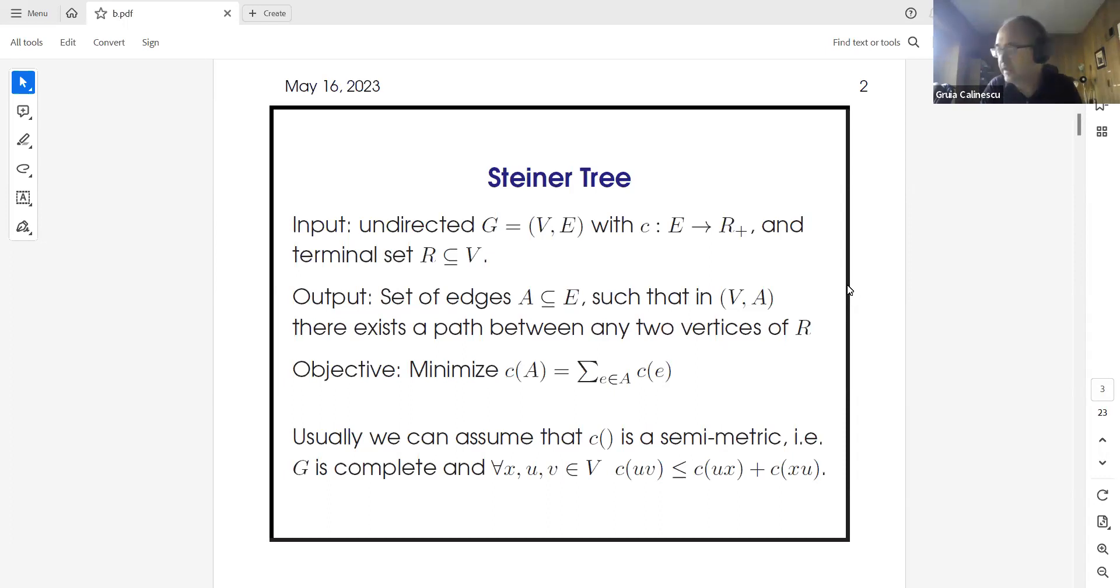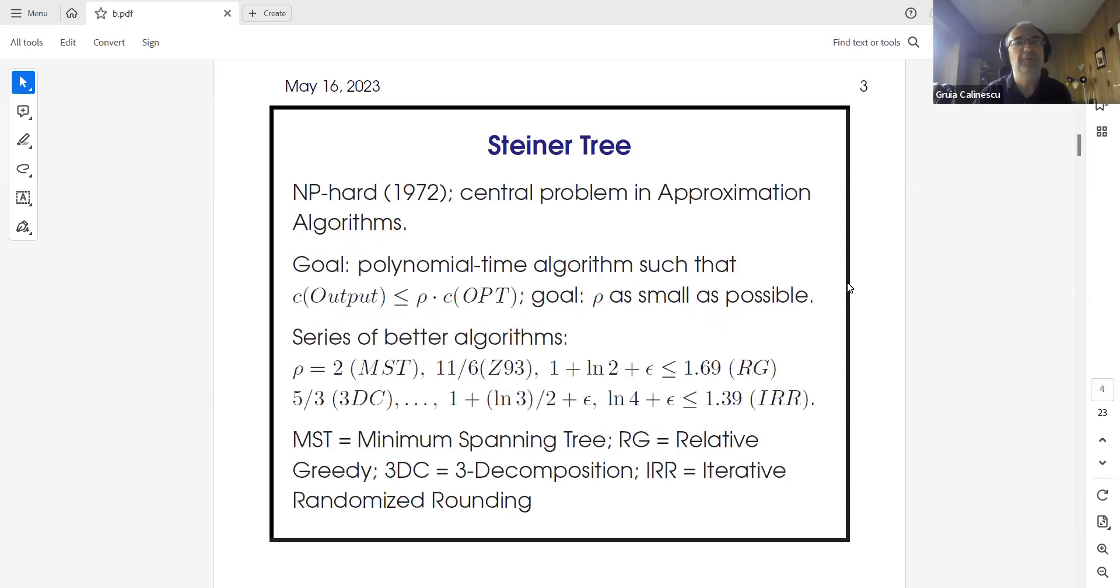We want to find the minimum cost such set of edges. In most scenarios, including ours, you can assume that this cost is semi-metric. That means besides being non-negative, we have the triangle inequality. The cost of an edge u,v is at most the cost of u,x plus cost of x,v for every u and v.